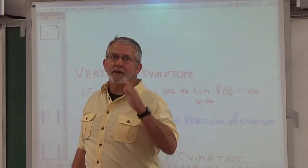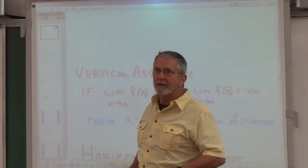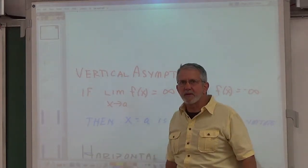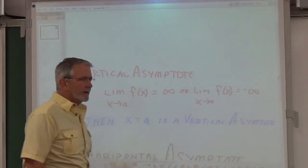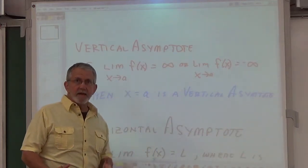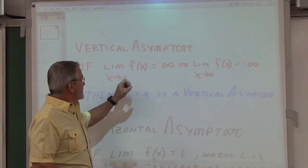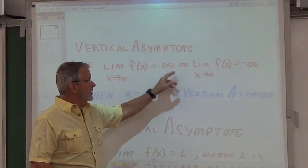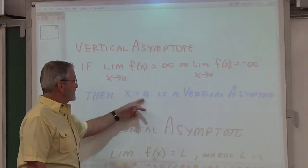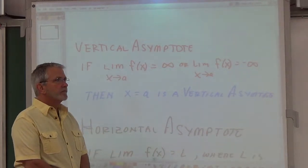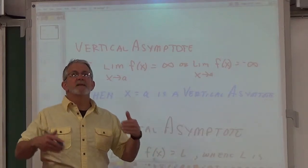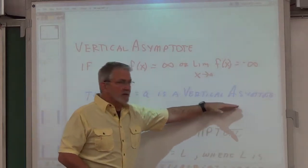The reason we were informal is that in PreCalculus you don't have the concept of a limit. We do now. Most of the definitions we talk about in Calculus are based on the limit concept. Here is the definition for the vertical asymptote: if the limit as x goes to some arbitrary value a of f(x) goes to positive or negative infinity, then by definition x equals a is a vertical asymptote. All we're doing now is formalizing why we can call something a vertical asymptote.